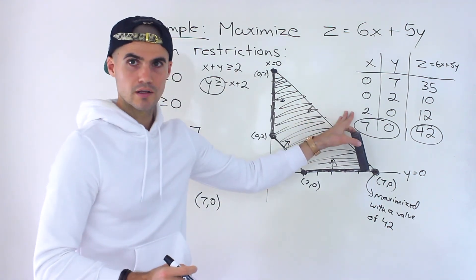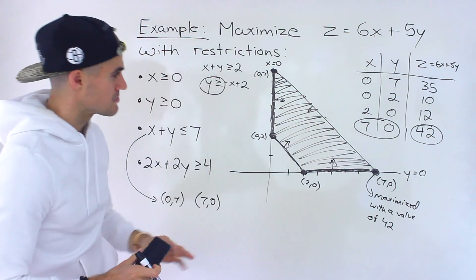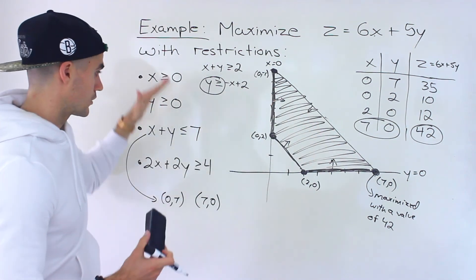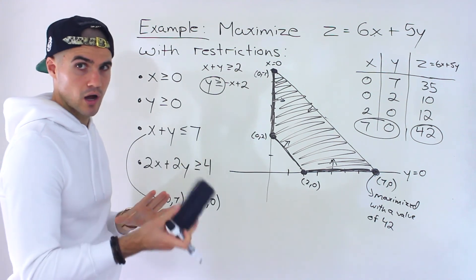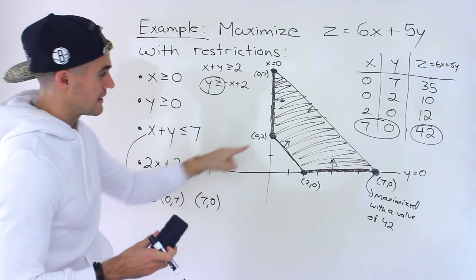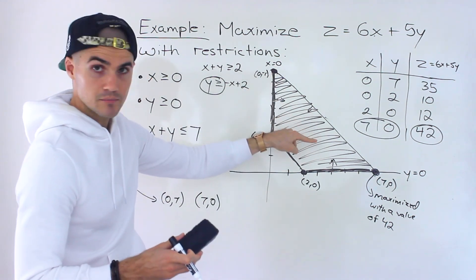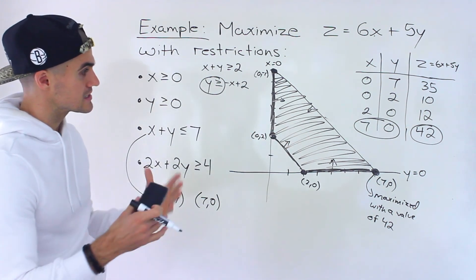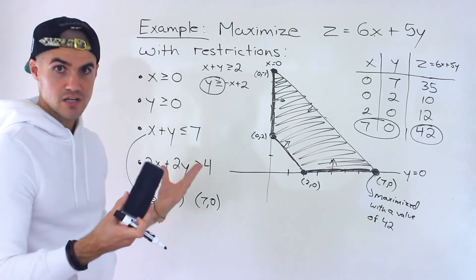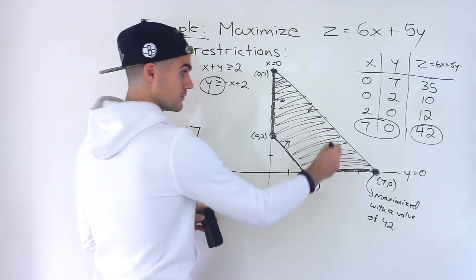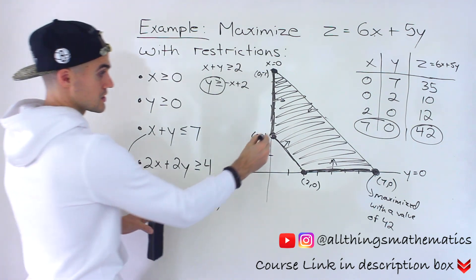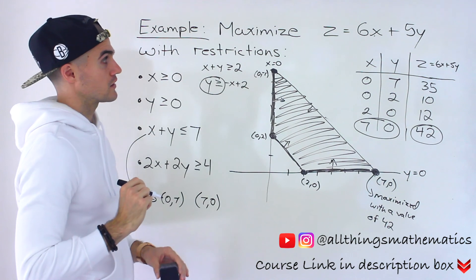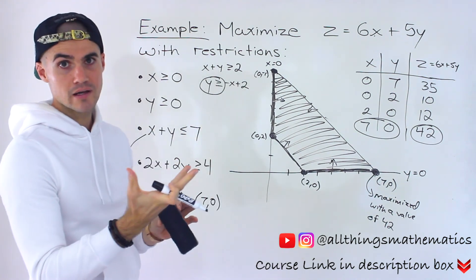This part — evaluating the corners — is actually the easiest step. The trickiest part is finding the feasible region. This example wasn't too bad, but there can be more restrictions, more complexity, and finding corner points can sometimes require solving systems of equations. We'll go over more complex examples, but that's the basic process: find the region, get the corners, test them in the objective function, and find the maximum or minimum value.